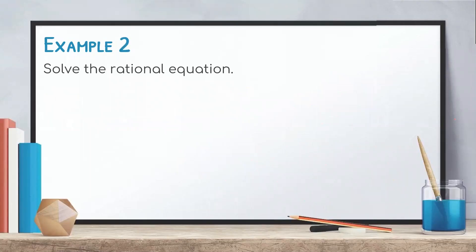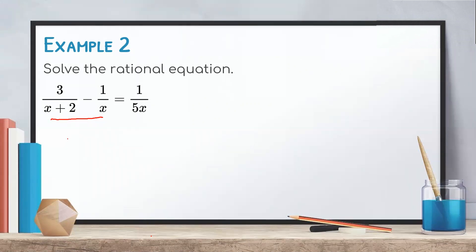Let us have another example. Solve the rational equation 3/(x + 2) − 1/x = 1/(5x). In this given, notice that there are two rational expressions on the left side of the equation. Hence, we cannot use cross multiplication. To solve this, we need to multiply the whole equation by the least common denominator.